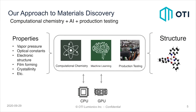Our approach to materials discovery is somewhat unique in that we're able to specify a list of properties. For OLED materials, we're interested in things like vapor pressure, optical constants, etc. Through a combination of computational chemistry, machine learning, and production testing, we're able to propose a small set of candidate materials that we can then synthesize and provide to our customers.